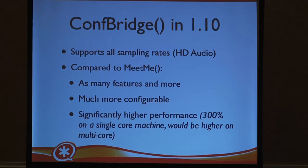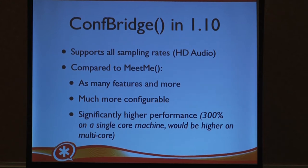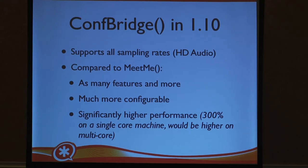So what we did in 1.10: ConfBridge is mostly rewritten, but one of the biggest things is it supports many more types of audio. Traditional telephony is fairly low-quality audio — it's an 8 kilohertz sampling rate — but now that we're not as tied to the traditional telephone network, there's no reason to have your audio quality tied to the limitations of that old network. So we can now do conferencing of much higher-quality audio. It's also much more configurable, and we spent a lot of time on performance. In some comparisons against MeetMe, it was triple the performance on a single-core Celeron box, and it would be an even higher impact on a multi-CPU or multi-core machine since it does a better job of allowing things to be parallelized.